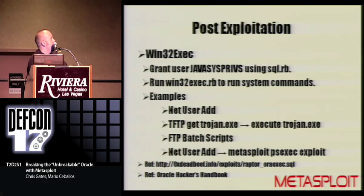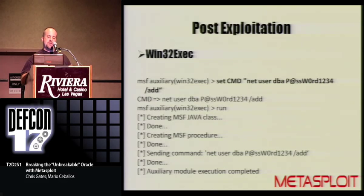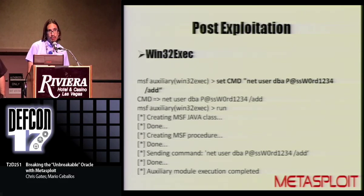Several published methods have been around for a while for running OS commands on the database once you've got DBA access: you can do it via Java packages and classes, via xproc backdoors, or run OS commands via DBMS scheduler. The first one we'll talk about is Win32 exec, which is in the framework now. You grant javasys privs to whatever user you're running as, then run the Win32 exec module to execute OS commands via Java. So you can do NetUser add, TFTP your Trojan over, do FTP batch scripts. You set the command to whatever OS command you want — in this case we're adding a user. It creates the class, creates the procedure, runs the command, and cleans up, deleting the Java classes. The big takeaway is that if you want to escalate through the network further, it's probably better to break out of the Oracle sandbox and get to the operating system.